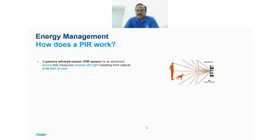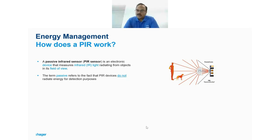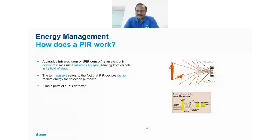This fact is key: a passive infrared sensor does not radiate energy for detection purposes. Since we are talking about energy saving and reducing carbon footprint, it's not a good idea to keep sending waves through a room all the time, which also has CO2 implications. Being passive is therefore very good in multiple ways.